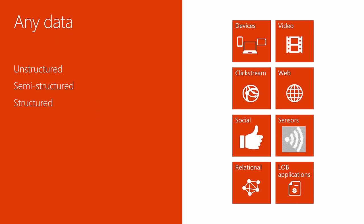Data Lake Store allows you to store relational and non-relational data. It also does not require a schema to be defined before the data is loaded. This data can be from devices, videos, and web applications. Here data can be further classified into unstructured data – data that either does not have a predefined data model or is not organized. It is typically text-heavy and may contain data like dates, numbers, and facts.